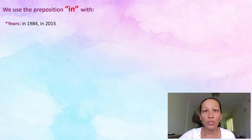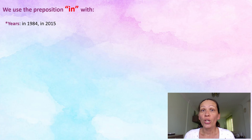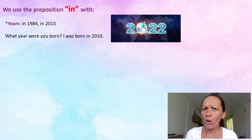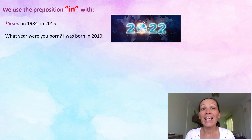We also use the preposition 'in' when we're talking about years — in 1984, in 2015, or in 2022. So, what year were you born? I was born in 2010. Always when we're talking about the year, we need to use the preposition 'in'.